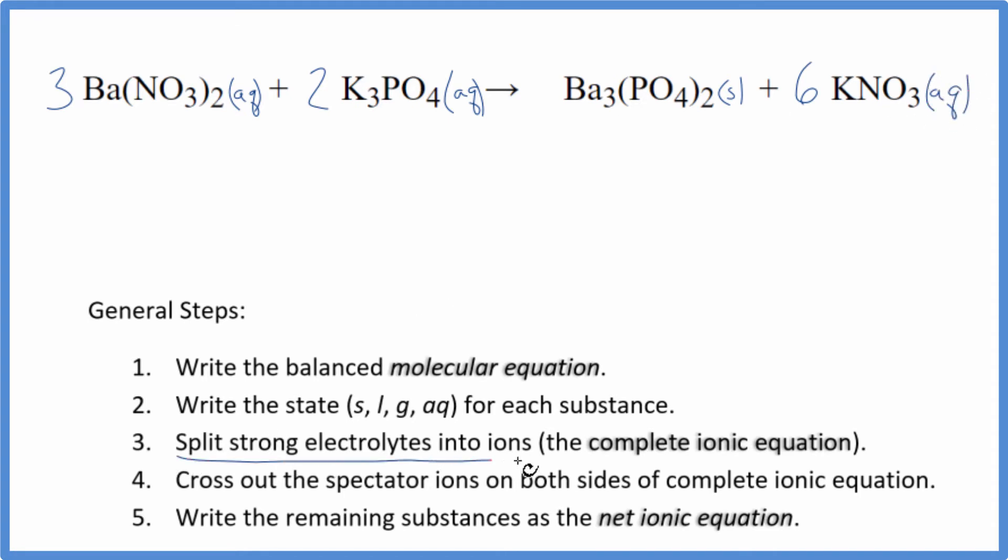Now we can split the strong electrolytes into ions. And that's going to be the complete ionic equation. Barium's in group two. It's two plus. And then the nitrate ion, the whole thing, is one minus. Good one to remember. Three barium ions. And I won't write the states each time.